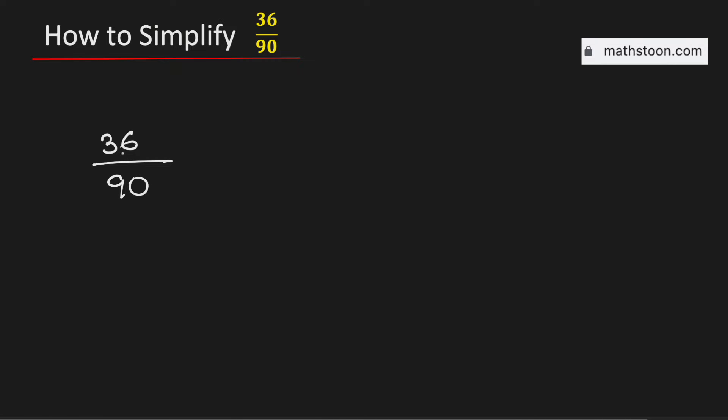In this video, we will simplify the fraction 36 over 90 in its simplest form. To simplify it, at first we will find the greatest common factor of 36 and 90.